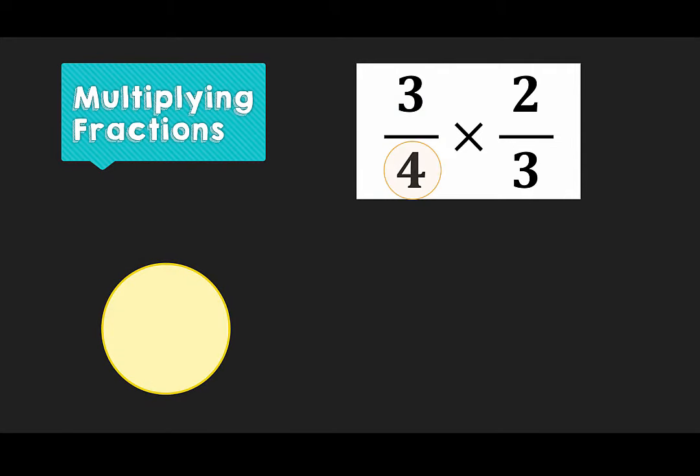The 4 in the denominator means we cut the whole into 4 equal pieces, or quarters. And the 3 in the numerator means we have 3 of these quarters.